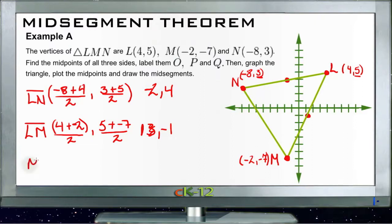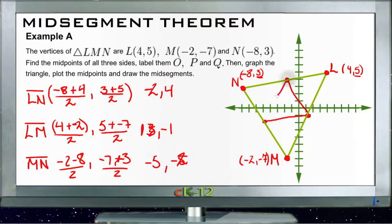And then finally for MN, we have -2 minus 8 over 2, and -7 plus 3 over 2. -2 minus 8 is -10, divided by 2 is -5. And -7 plus 3 is -4, divided by 2 is -2. So that one is at (-5, -2). So there's our 3 midpoints, and that means that these 3 lines right here represent the midsegments. There we go.